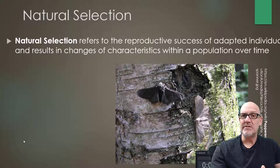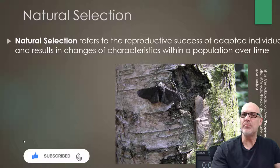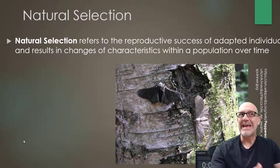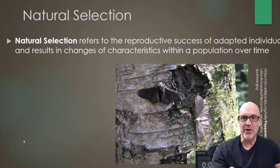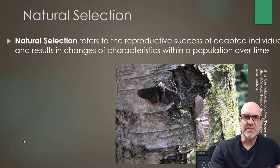The white one just happens to be an adapted individual. This is really important: the white one didn't do anything to get adapted — it just happened to be white. And because of that, we call it an adapted individual because it has the color trait of being white, and therefore it camouflages well with the tree. Therefore it's adapted, whilst the black one is not necessarily adapted.